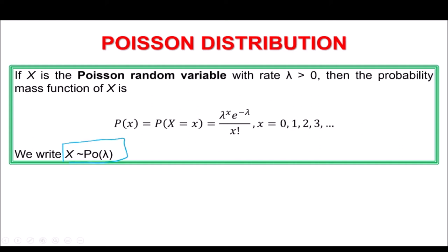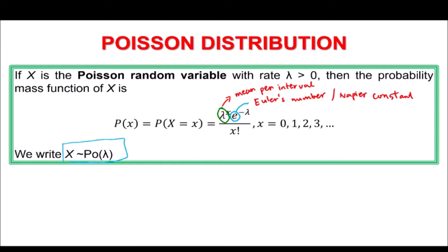Let's analyze this formula. The lambda here is actually the mean per interval — we also call it the rate. The e here is Euler's number, also called the Napier constant, and we know that Euler's number has a value of 2.718. So when we use the formula, we substitute 2.718 for e.